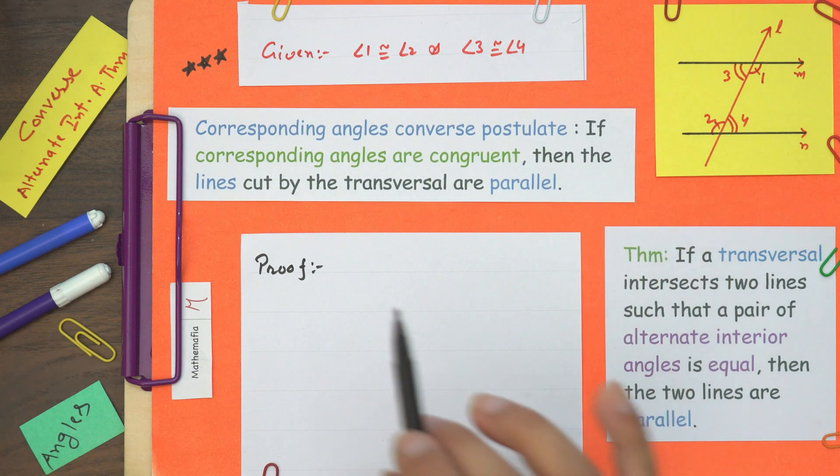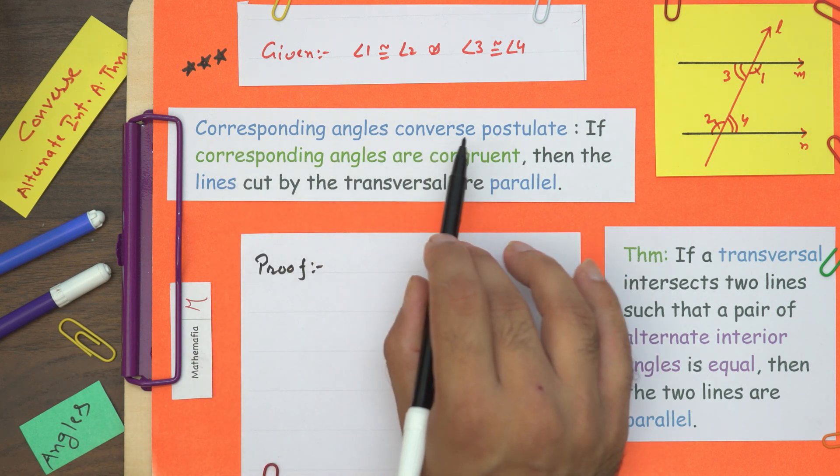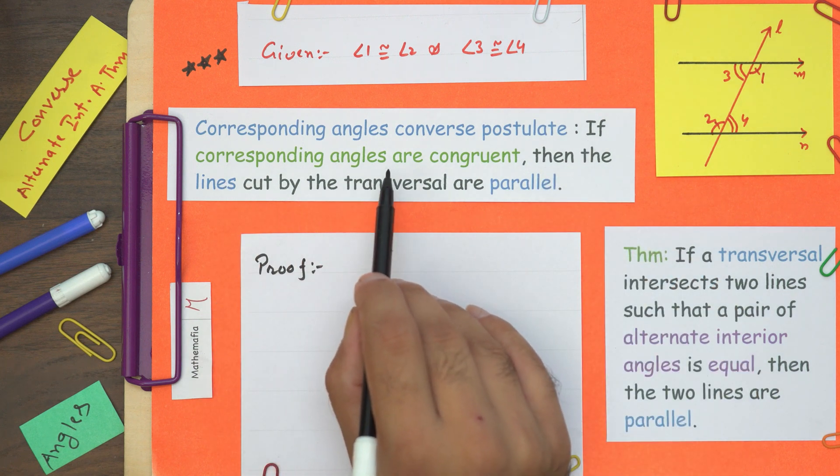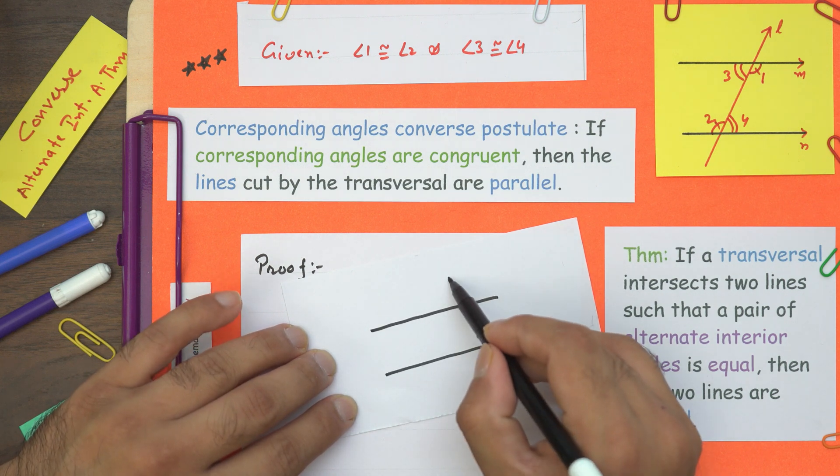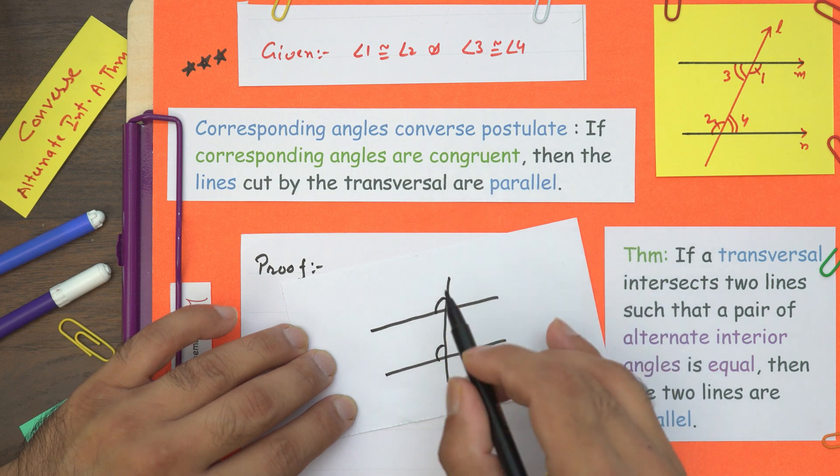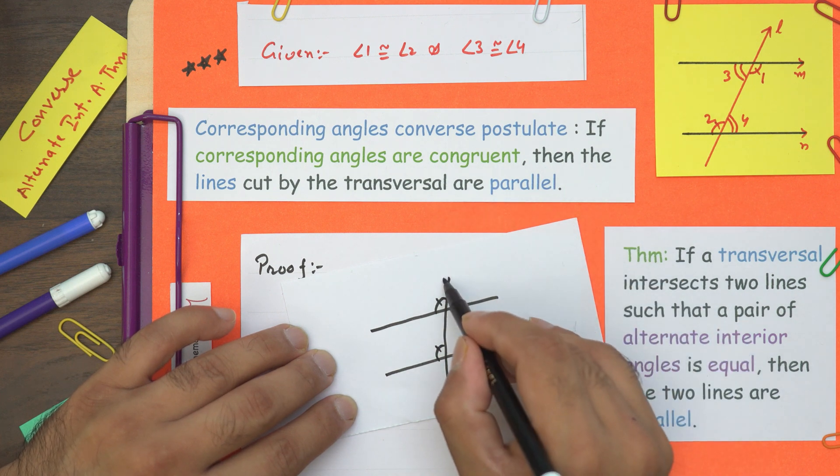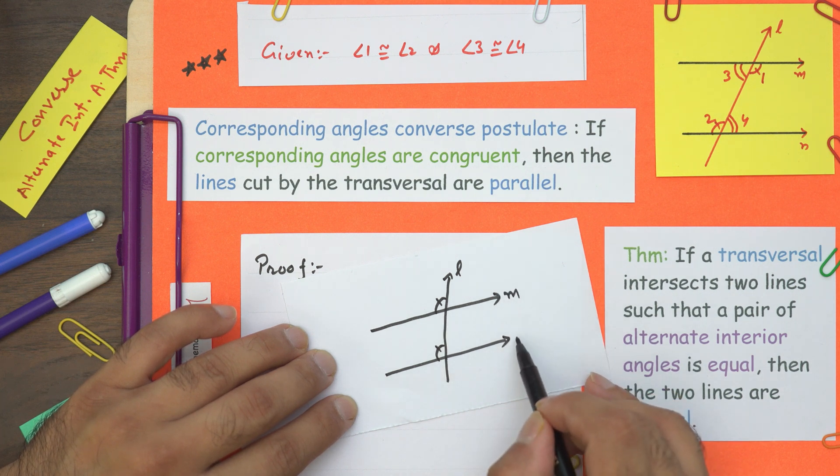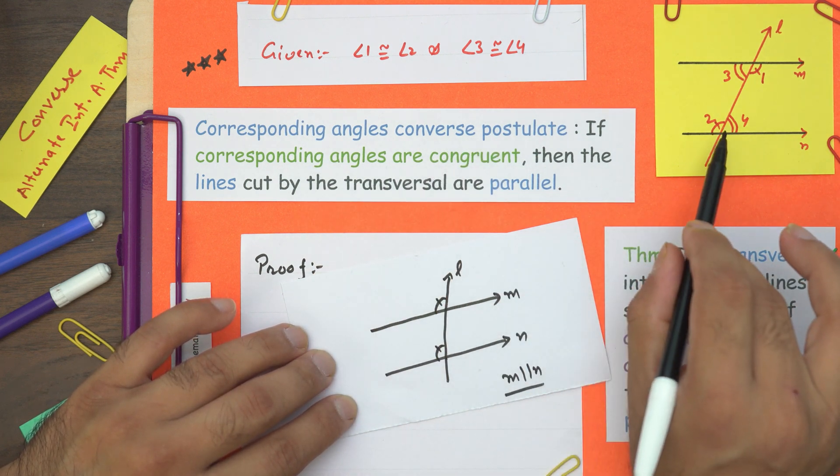Now before we start the proof, let's understand one postulate: the corresponding angles converse postulate. We will use this to prove the theorem. It states if corresponding angles are congruent, then the lines cut by the transversal are parallel. We will use this postulate in this theorem to prove that M and N are parallel.